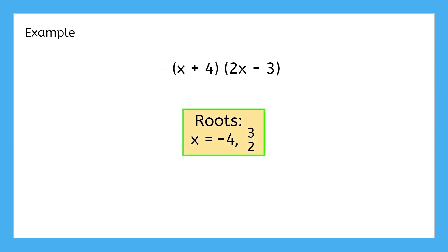If we input either negative four or three halves for x, one of the factors will simplify to zero, making the output for the entire function zero.